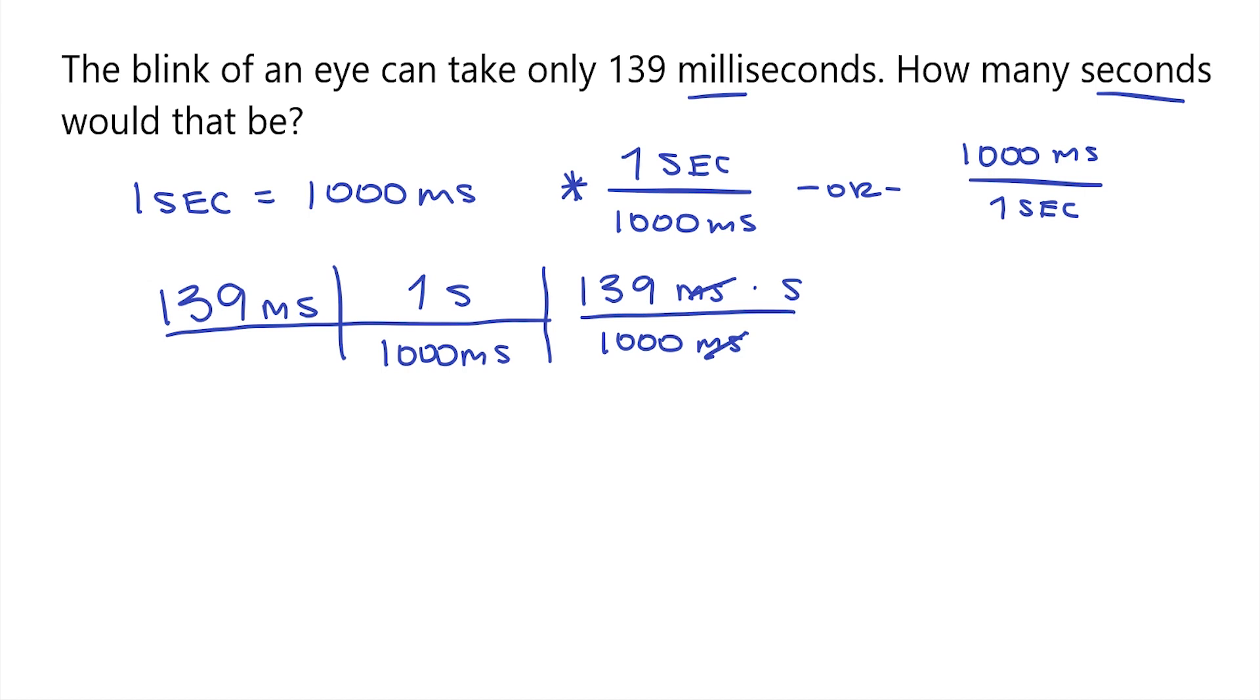But since I don't have seconds on the bottom, it's going to stay up on top. So now, 139 divided by 1,000, this is going to be equal to 0.139 seconds. So now we know that for every 139 milliseconds, that's going to be equal to 0.139 seconds.